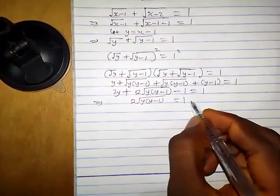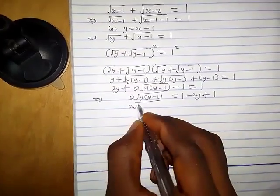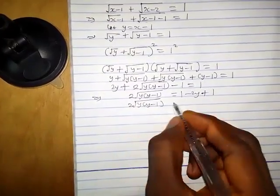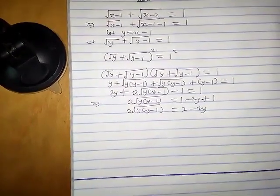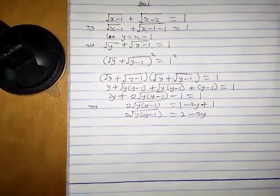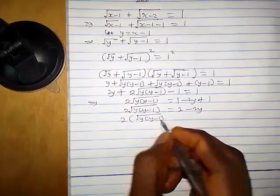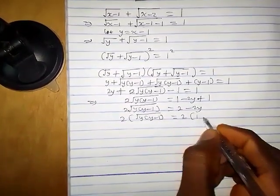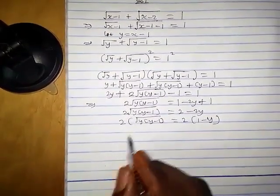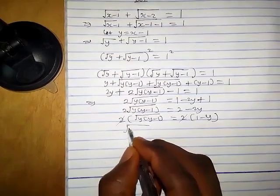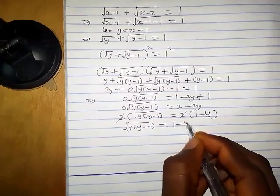Moving terms to the right-hand side, we have 2 square root of y(y minus one) equals 1 plus 1 minus 2y, which is 2 minus 2y. The common factor on both sides is 2, so we pull out 2: 2 times square root of y(y minus one) equals 2 times (1 minus y). Dividing both sides by 2 gives square root of y(y minus one) equals 1 minus y.